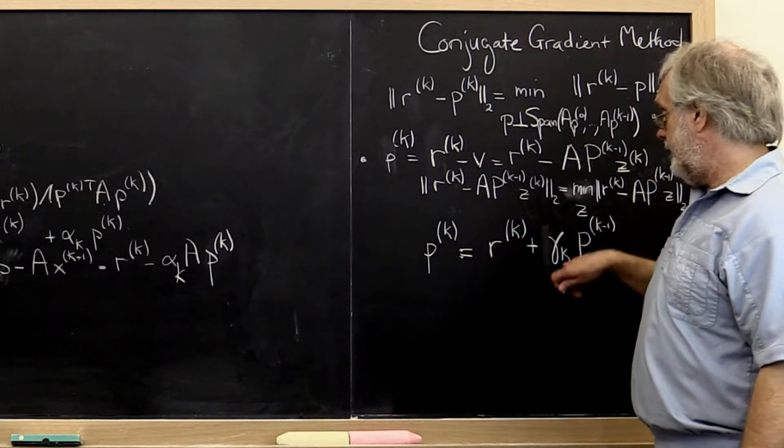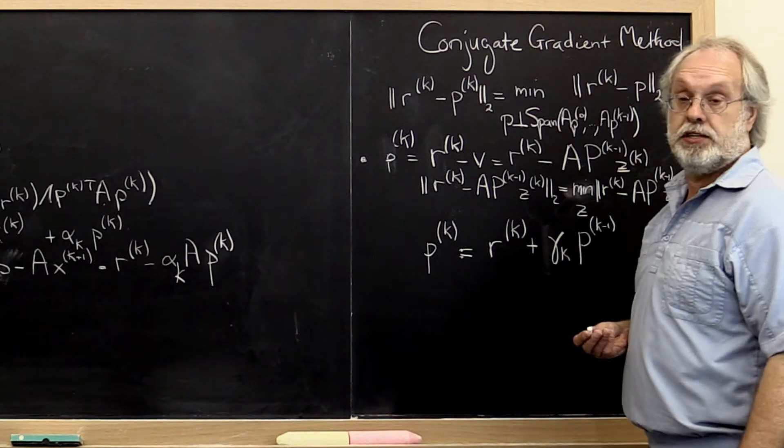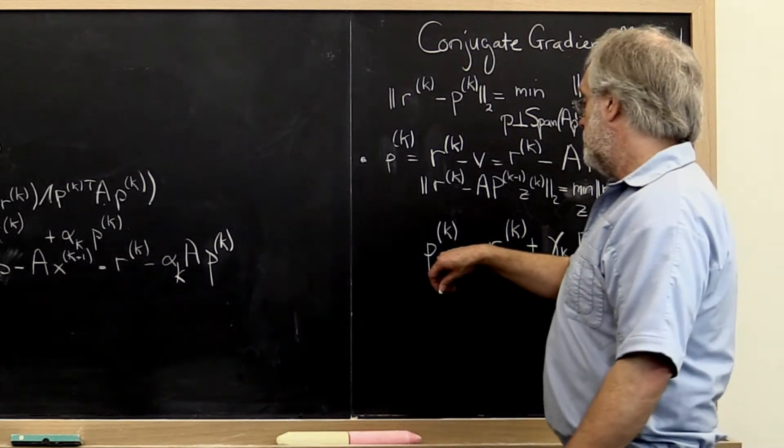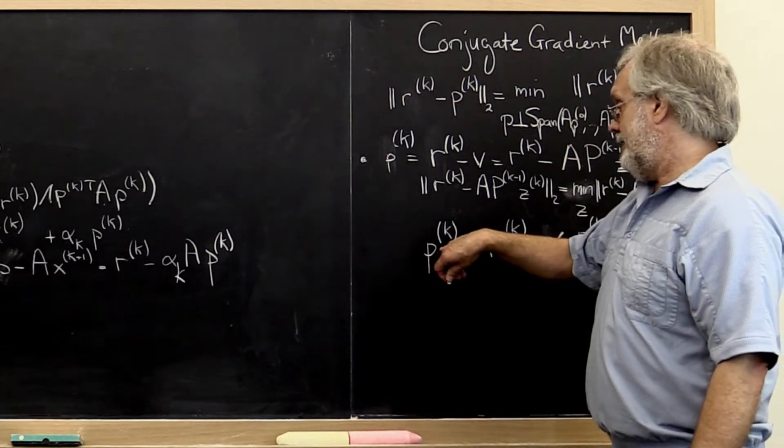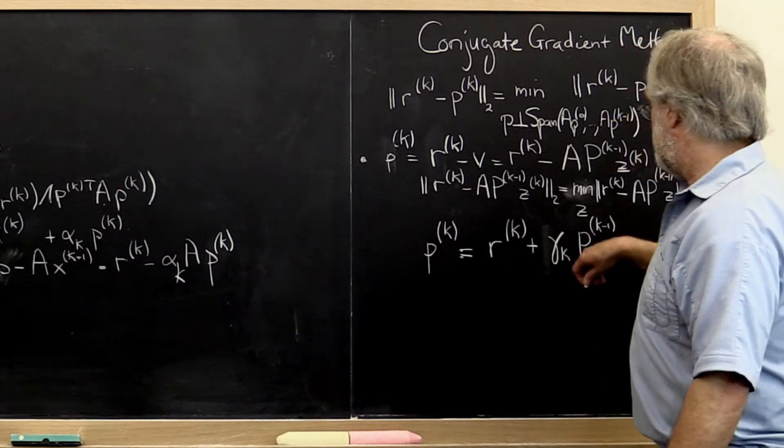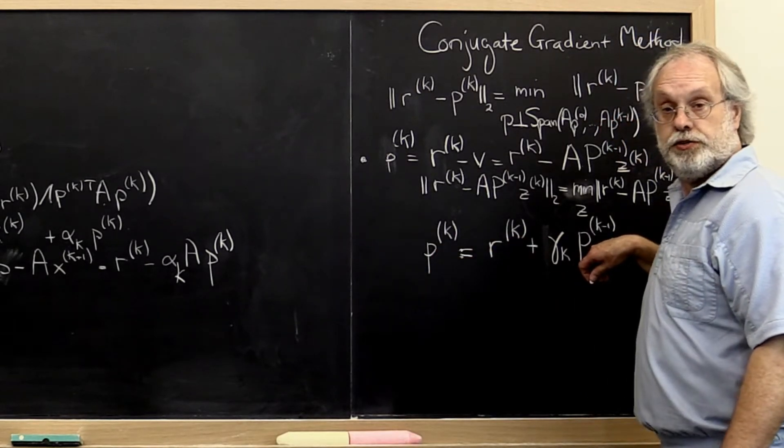Notice with this it's very easy to determine what gamma_k is because we know that the next search direction is conjugate to the previous search direction.